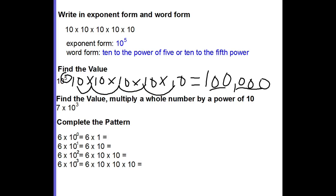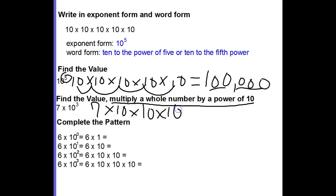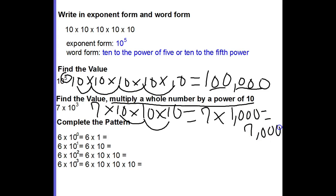Now let's move on to 7 times 10 to the third power. This time we have to multiply a whole number by a power of 10. So 7 times 10 to the third power means 7 times 10 times 10 times 10. Since 10 times 10 is 100 and 100 times 10 is 1,000, we're really saying 7 times 1,000, which gives us 7,000. Again, there's a pattern to notice here.